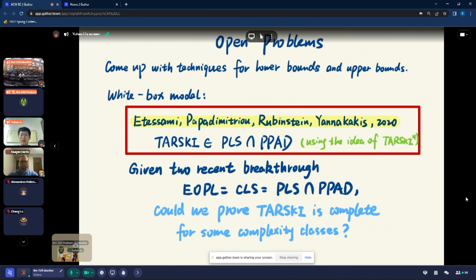For the white box model, Atesame, Papadimitriou, Rubinstein, and Yanakakis also proved that Tarski is in the intersection of PLS and PPAD. The most interesting part is when they proved the PPAD membership, they actually used the idea of Tarski star, not the original Tarski. Given the two recent breakthroughs that we have complexity classes results that EOPL equals to CLS equals to PLS intersect PPAD, then the question would be could we prove Tarski is complete for some complexity classes and the minimal that we know is CLS or EOPL. Thanks.